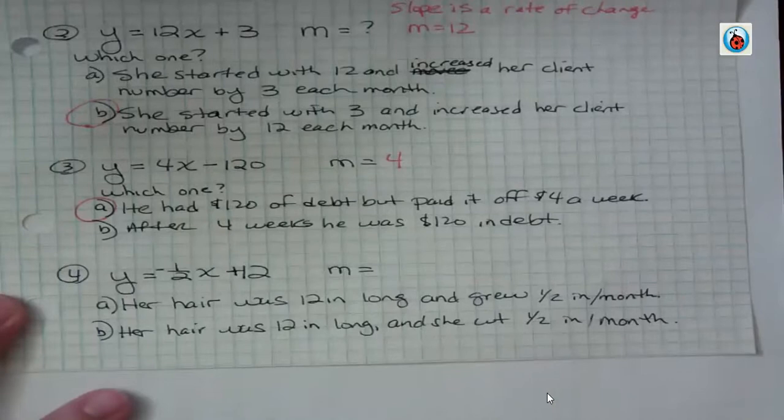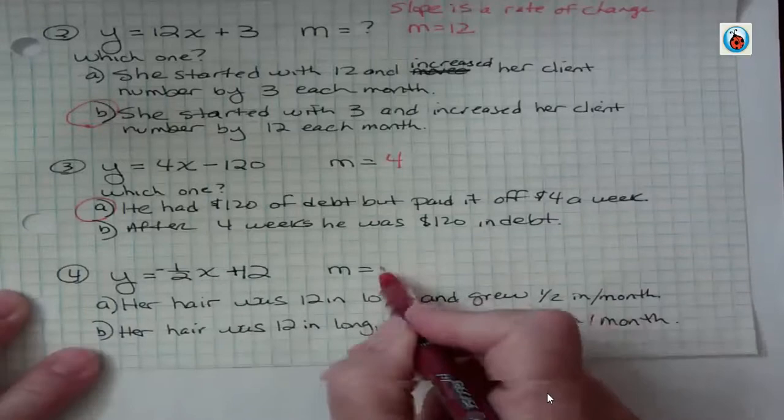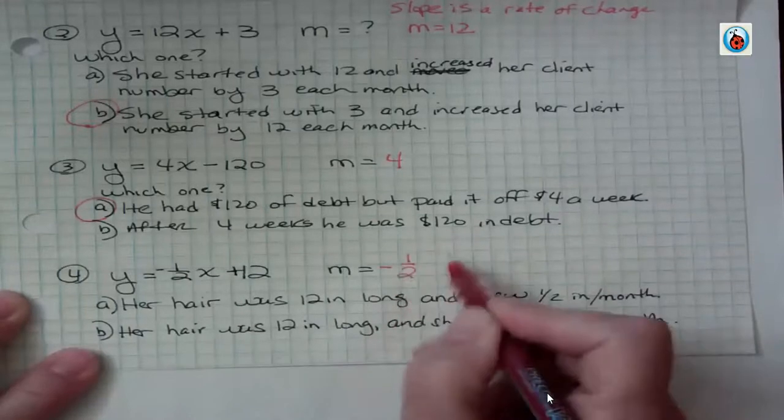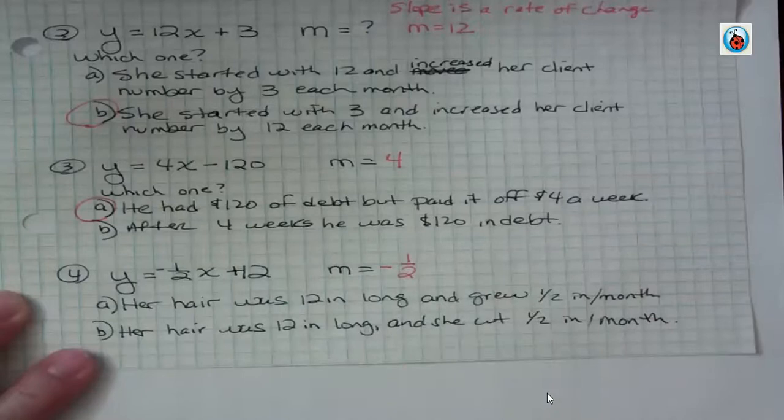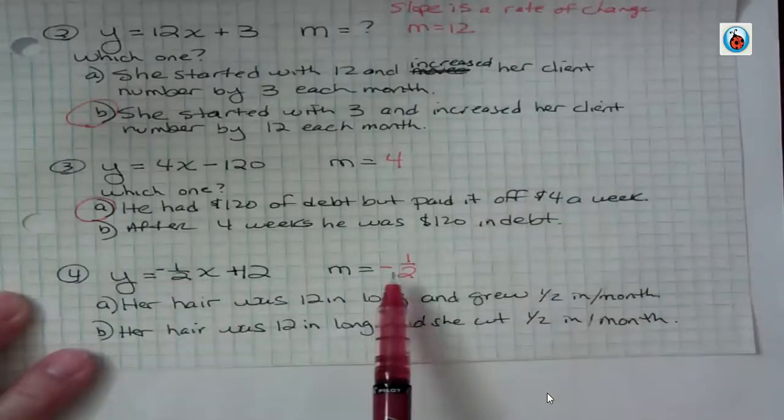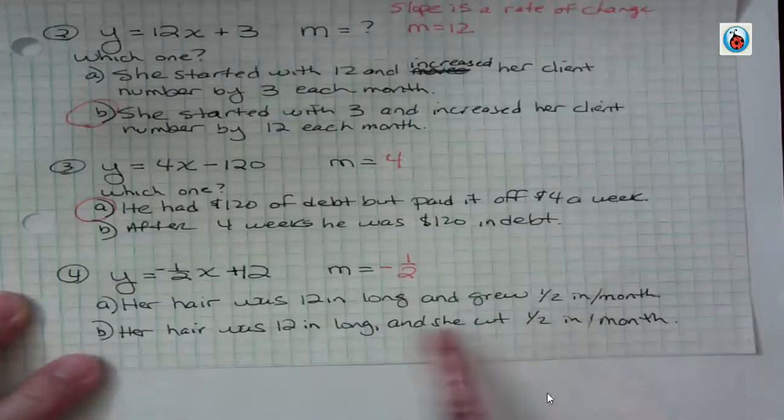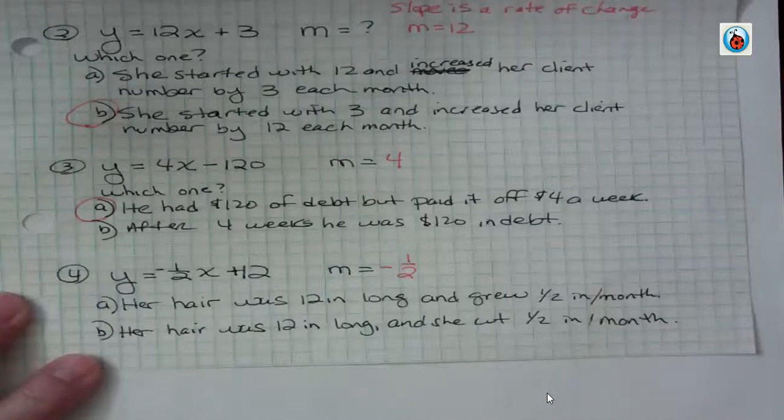Well, the slope is negative 1 half because our coefficient of x is the slope. Notice the slope doesn't include the x. It's the number next to the x and it's a rate of change. By this rate of change being negative, we're talking about growing hair. Since it's a negative, was she growing hair or was she cutting hair? Are we getting more or are we getting less? Well, it's negative, so there's actually a decrease.